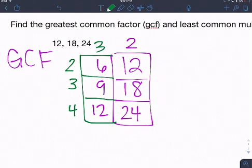And 3 times 4 is 12. And so now I can take those two factors that I have up on the top and multiply them together. And 3 times 2 is 6, so my greatest common factor is 6.